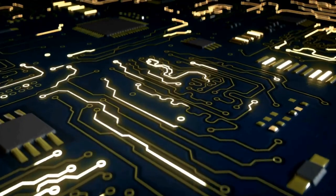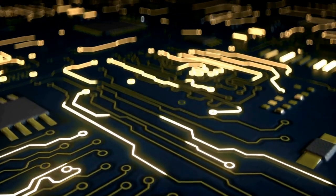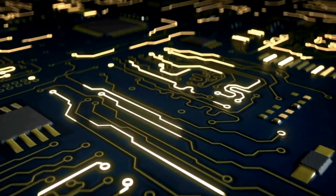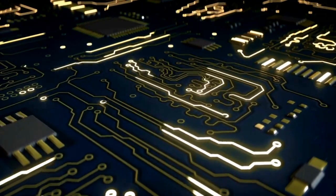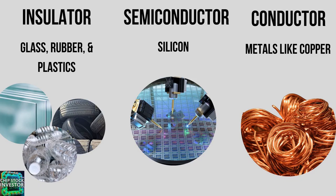We use electricity in circuitry. This is the flow of electrons, usually the flow of electrons from one atom to the next. An insulator is a material with tightly bound electrons that do not allow the flow of electricity — so think glass, rubber, plastics.